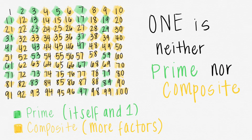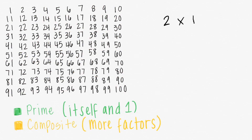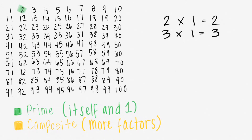The first thing we need to know is that 1 is neither prime nor composite. The only way to get the number 2 is to do 2 times 1 equals 2. There's no other way, so 2 is prime. The only way to get 3 would be by doing 3 times 1 equals 3. There's no other possible way to get 3, which means that 3 is also prime.